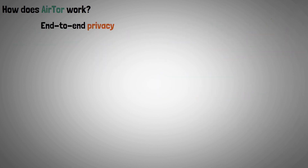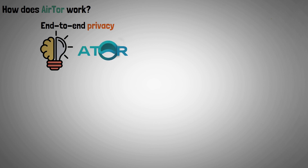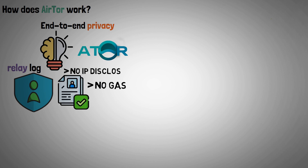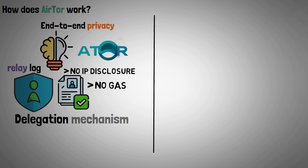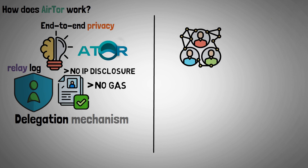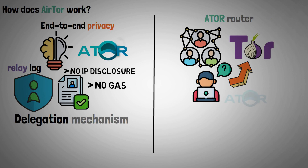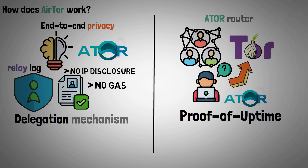End-to-end privacy is a key component of Airtor. Anonymity is guaranteed by the relay log. Registration can be done without gas and without disclosing the IP by using the delegation mechanism. Users can connect to the TOR network using Airtor's router. Relay hardware enables non-technical users to contribute to TOR and mine Airtor with proof of uptime rewards.